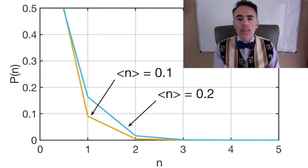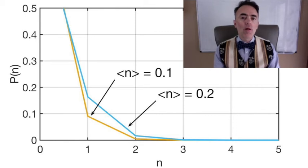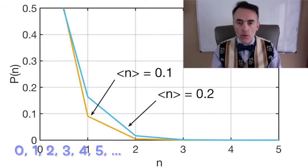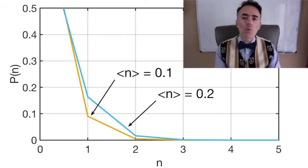Let's assume that with every pulse Alice selects randomly from two different intensities at this photon level and at this photon level. And because we are dealing with Poissonian distribution, this means that pulses will still contain 0, 1, 2, 3 photons, but the Poisson curve will be shifted.